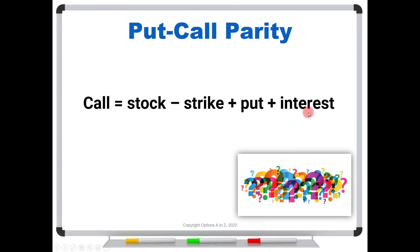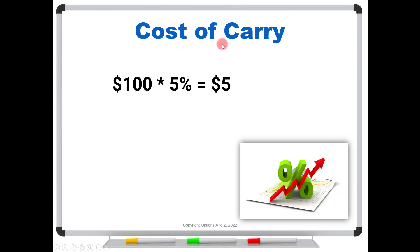To understand this formula better, let's start with the interest component and understand what's called the cost of carry. Assume you deposit $100 into a bank that pays 5%. At the end of the year, you will earn $5. But does that mean that's what it's worth today? No — this $5 isn't going to get paid to you for a full year. In finance, this is what we call the future value. Having money coming to you in a year is certainly not the same as having it land in your hands today.